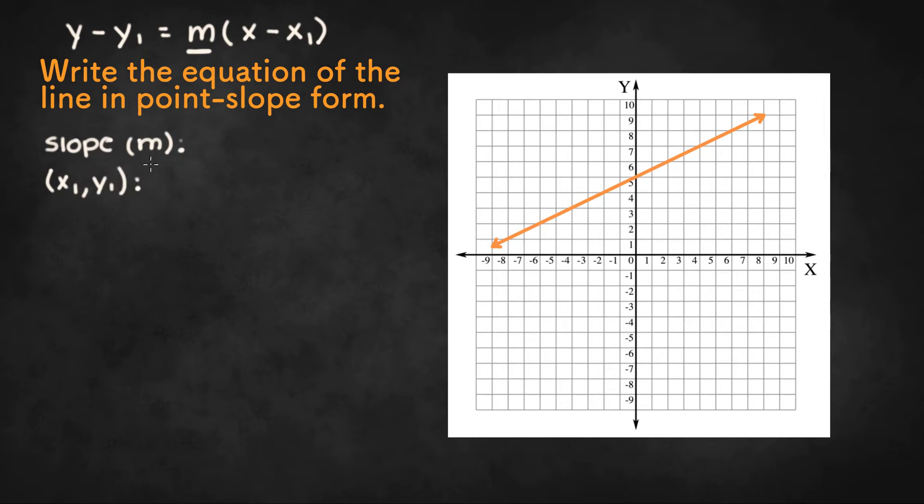So let's start off with slope. To find the slope of this line we could start at the y-intercept. So the y-intercept here seems to be (0, 5).